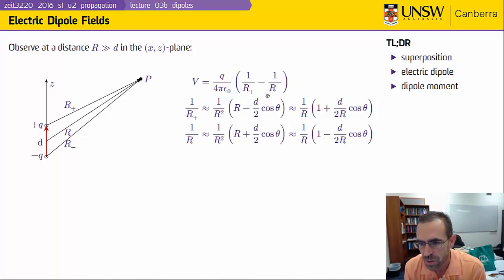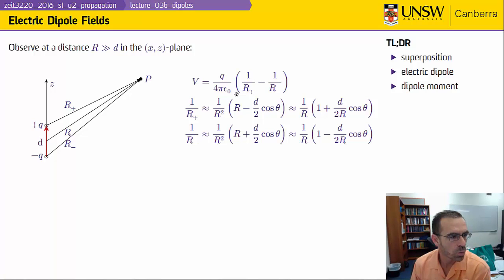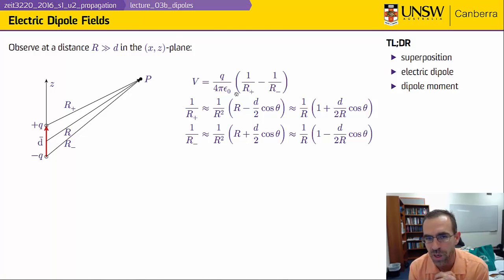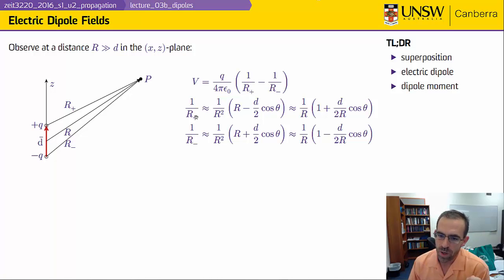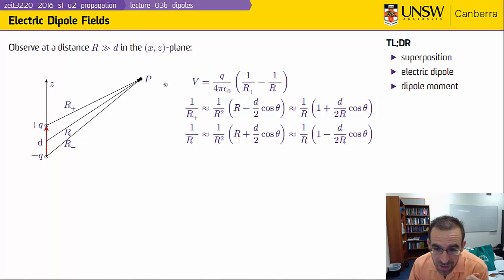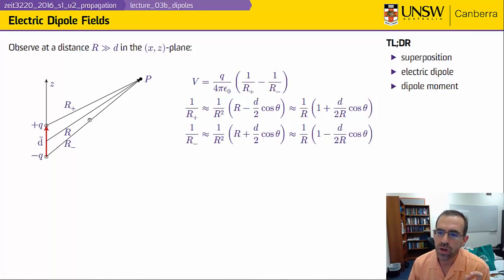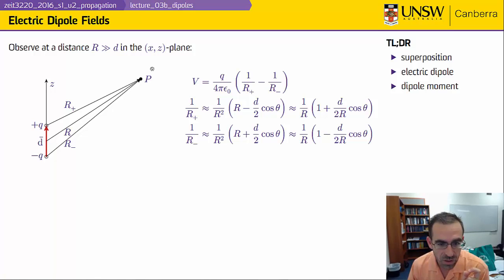We're going to use the Taylor series approximation. It's really a math exercise more than a fields exercise — a skill that electrical engineers should be comfortable with, and we can work through it in tutorial. I can write 1/r+ as approximately this expression, and when I factor things through, 1/r+ is almost equal to 1/r but with a little extra bit, because r+ is a little bit shorter than r. Likewise, 1/r− is a little bit smaller than 1/r because that length is a little bit more. These are the standard Taylor series approximations.